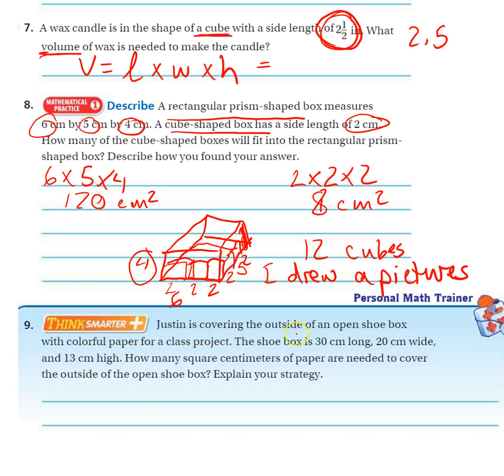Justin is covering the outside of an open shoe box. Okay, so we have a shoe box. It's open along the top, and he's just covering the outside of the shoe box, so not the top or the bottom, just the lateral faces.